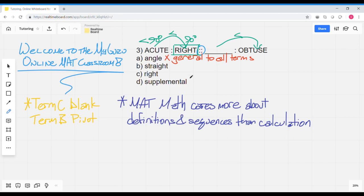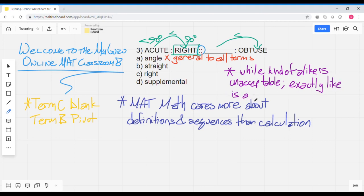Now then we've got three different terms when it comes to the exact relationship between the blank and obtuse. Another concept to just be aware of is that while kind of alike is unacceptable for the MAT, exactly alike is a possibility.